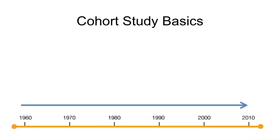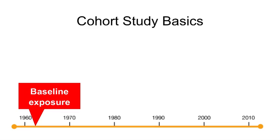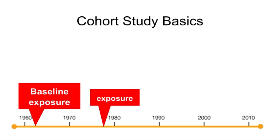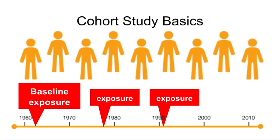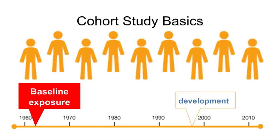Cohort studies track participants over time. Subjects are selected to be free of the outcome of interest at study onset, so it is clear that the exposure precedes the outcome. The exposure of interest is measured in all subjects at baseline and at regular time points during the study. Once the cohort is assembled and baseline exposures are measured, subjects are followed over time. New outcome events — such as incident cases of disease, death, or health status change — are counted throughout the follow-up period. New cases are used to calculate measures of incidence, usually a risk or a rate.